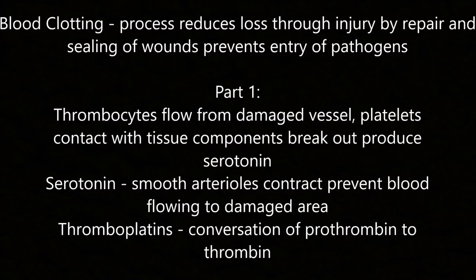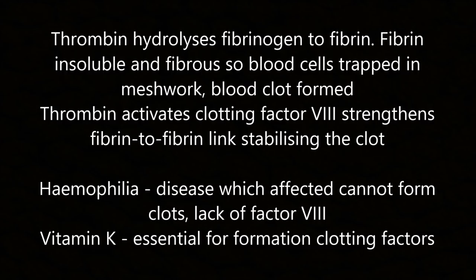Blood clotting reduces the loss of blood at injury and prevents the entry of pathogens by sealing wounds. Thrombocytes flow from the damaged vessel; platelets contact tissue components and produce serotonin, which causes smooth arterioles to contract preventing blood flow to the damaged area. Thromboplastins convert prothrombin to thrombin. Thrombin hydrolyses fibrinogen to fibrin, which is insoluble and fibrous; blood cells are trapped in the meshwork forming a blood clot. Thrombin also activates clotting factor VIII, strengthening the fibrin strands and stabilising the clot.